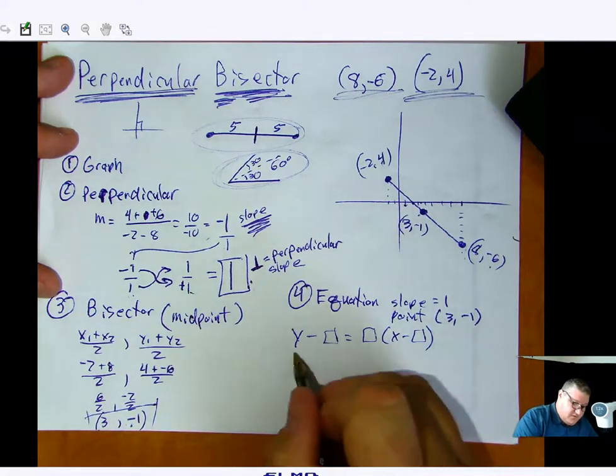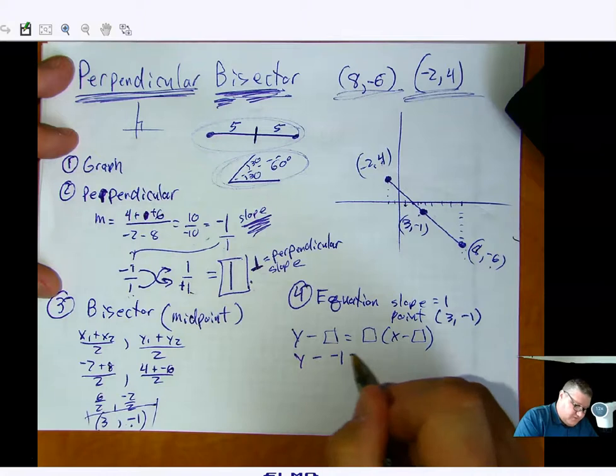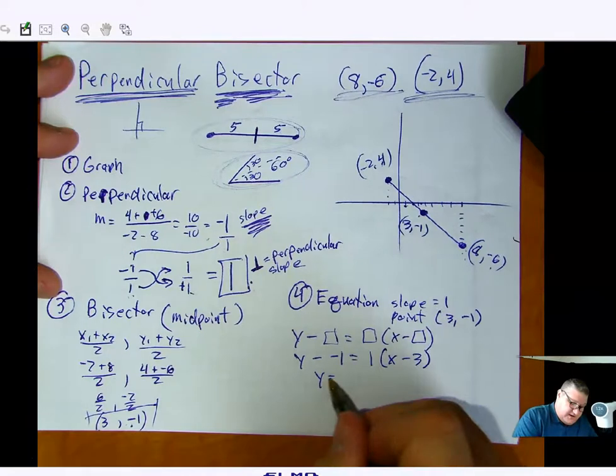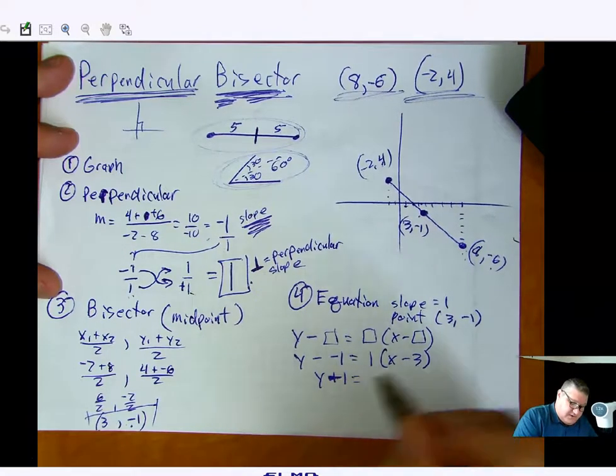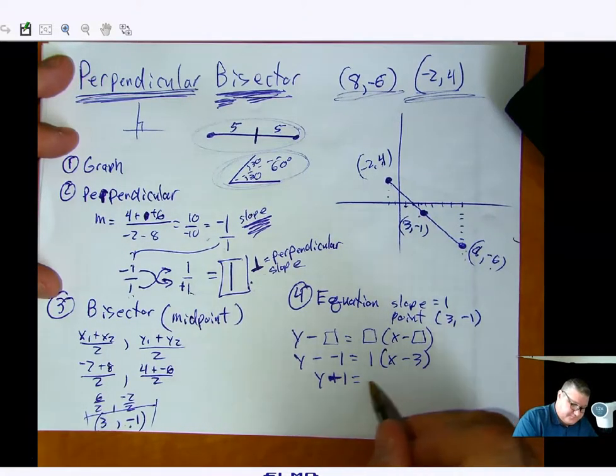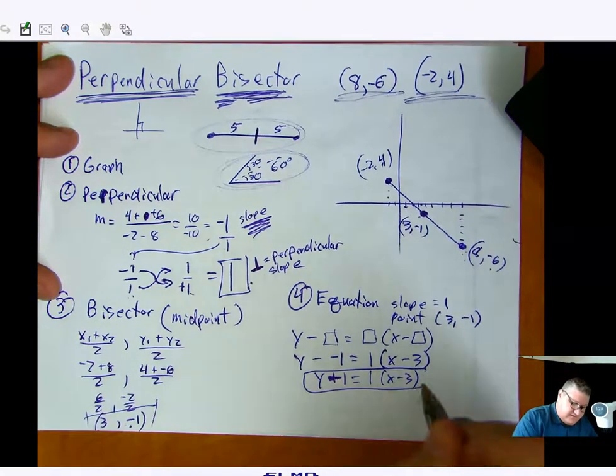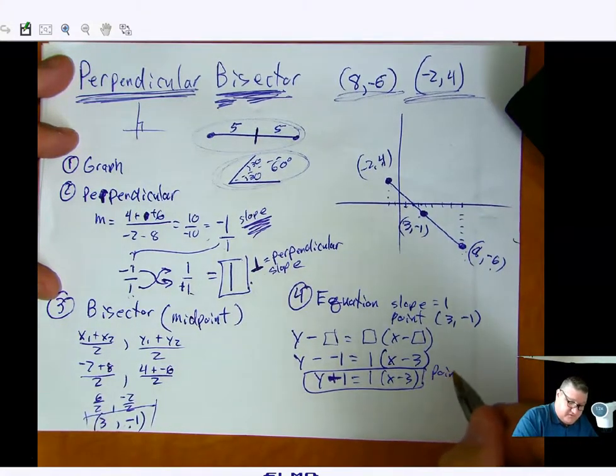Okay, so here we go. y minus negative 1 equals 1, parentheses, x minus 3. y plus 1 equals 1 times x minus 3. There it is. There's a perfectly good point-slope form.